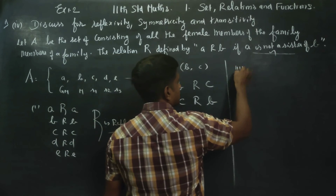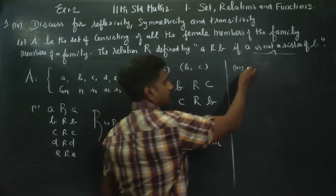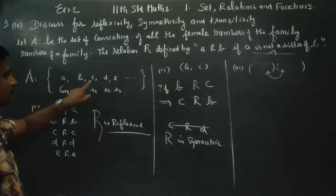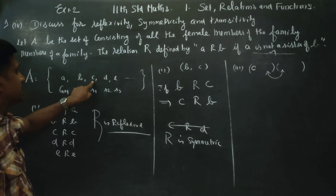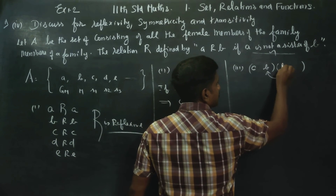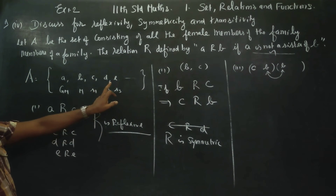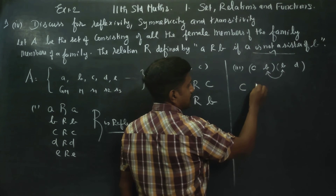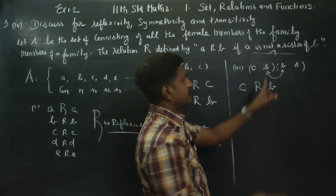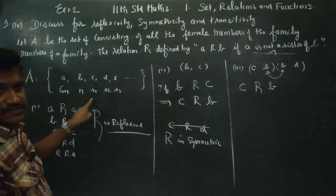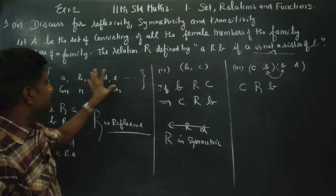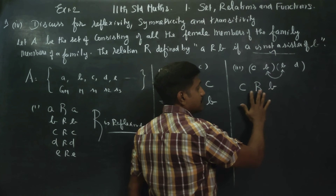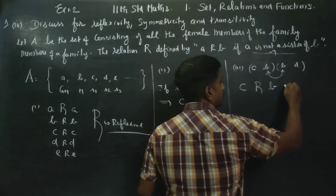Transitive — the third condition. For transitive, we need two pairs. For example, B and C, C and D. B is a sister. This is a sister. This is a sister.